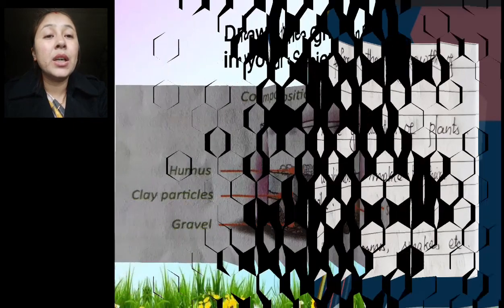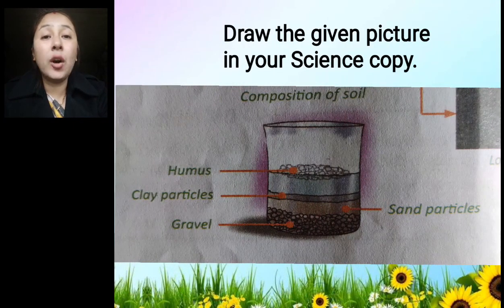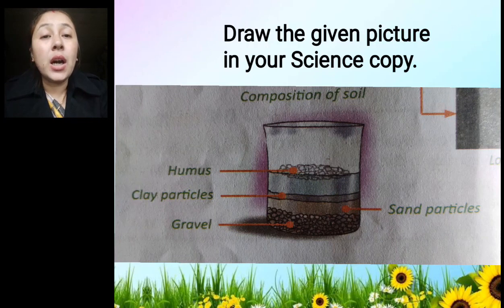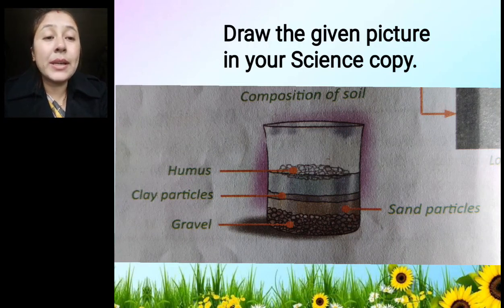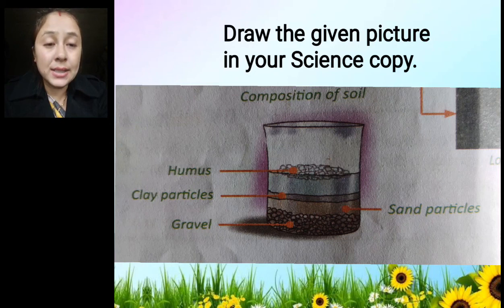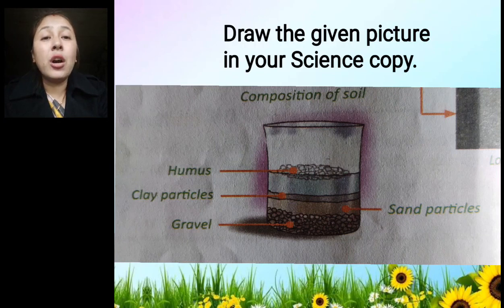Next, you will draw the given picture in your science copy — this is a composition of the soil. We have done activity 2 for this: when we pick a handful of soil and put it in a beaker, add water to it, and let it settle for some time, we see the soil is divided into different layers. At the bottom, gravel settles; then sand particles; then clay; then humus floats above the water. You need to draw this and label it — gravel, clay particle, sand particle, and humus. It is important for your exam.